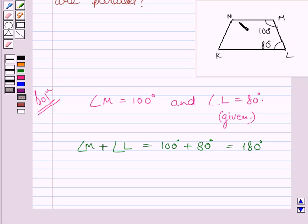Now, note that lines NM and KL are intersected by a transversal ML at two distinct points M and L. And sum of these two angles, or we can say sum of interior angles on the same side of the transversal ML, is equal to 180 degrees. So, this implies NM is parallel to KL.